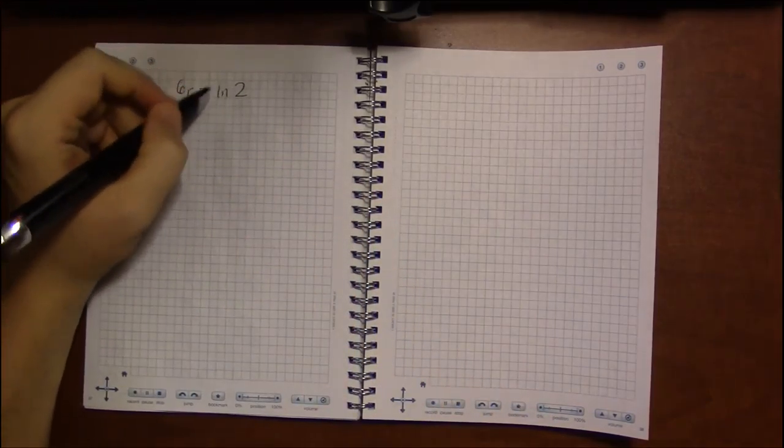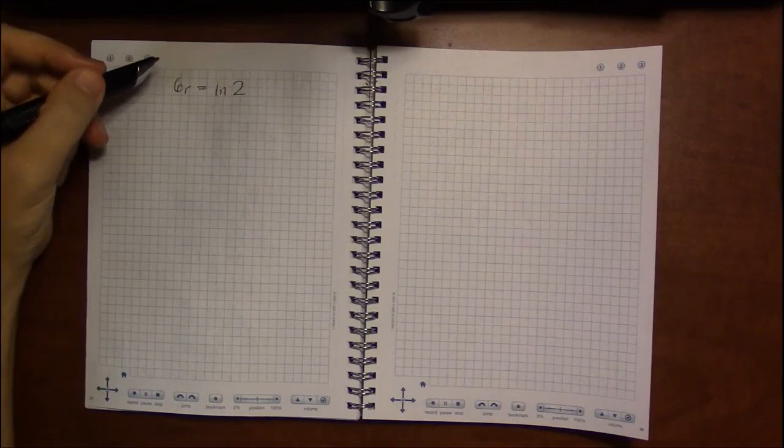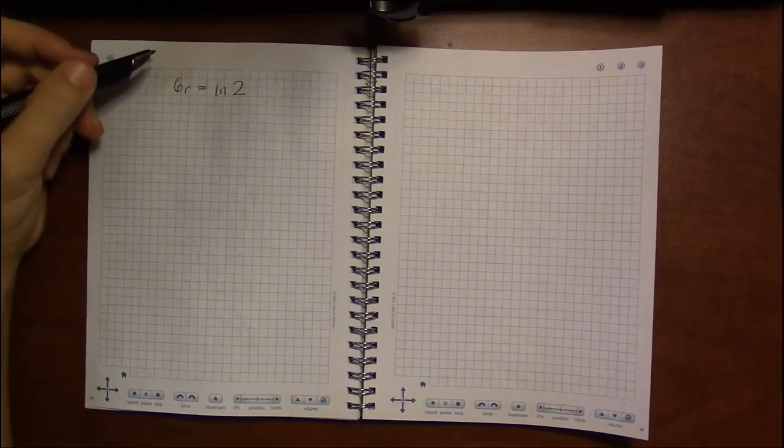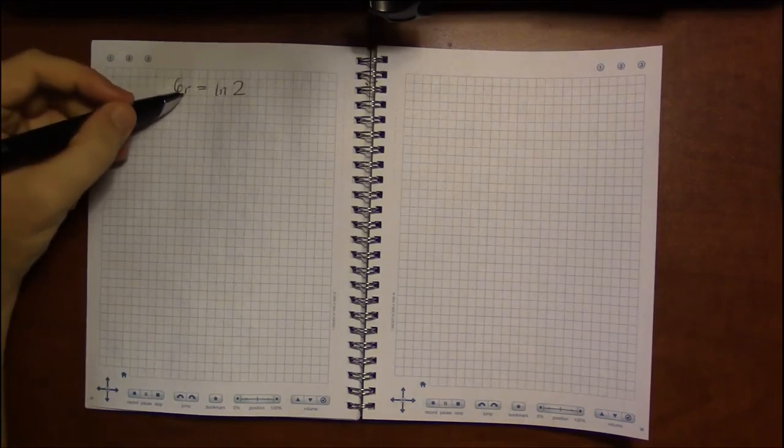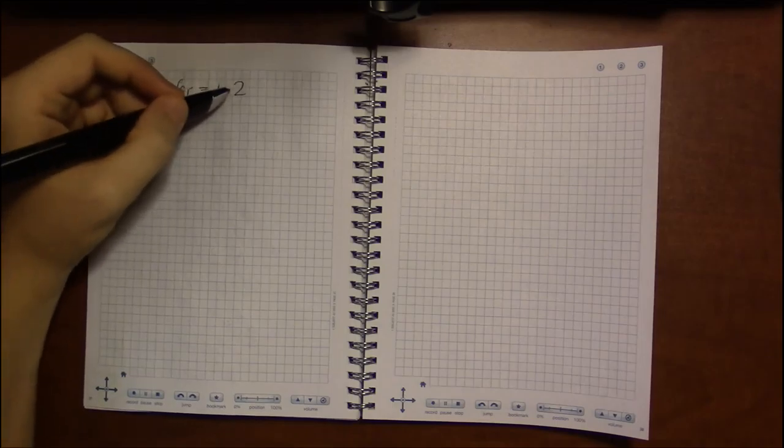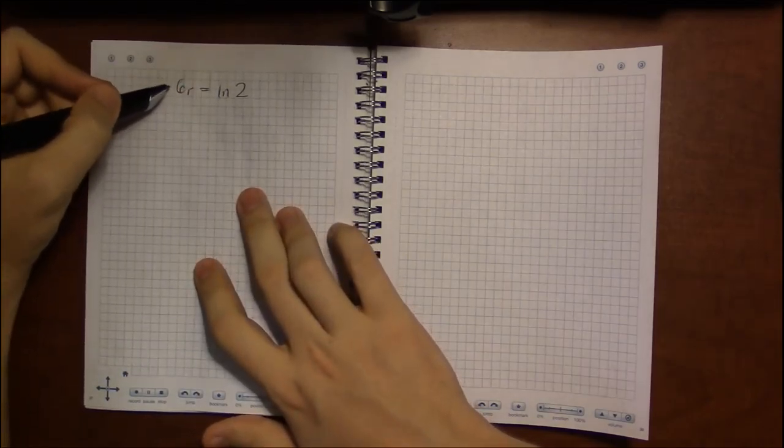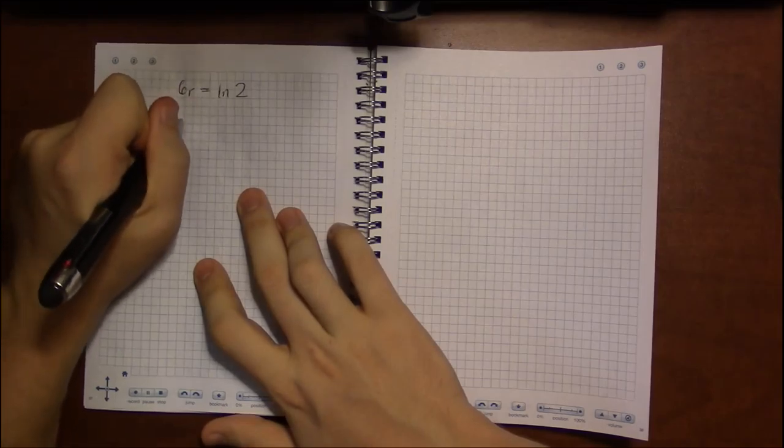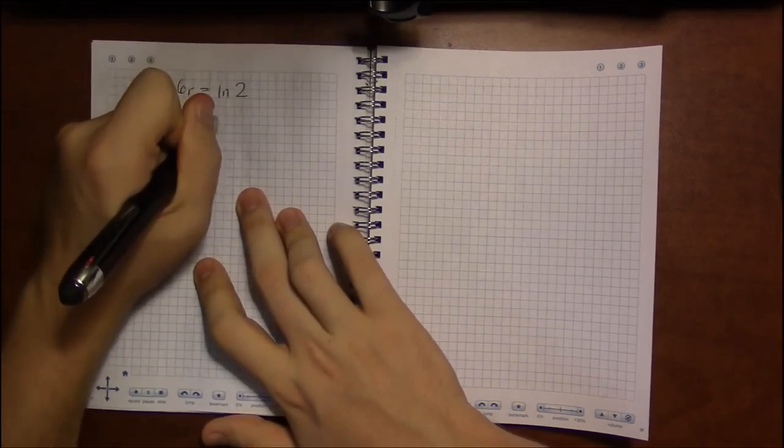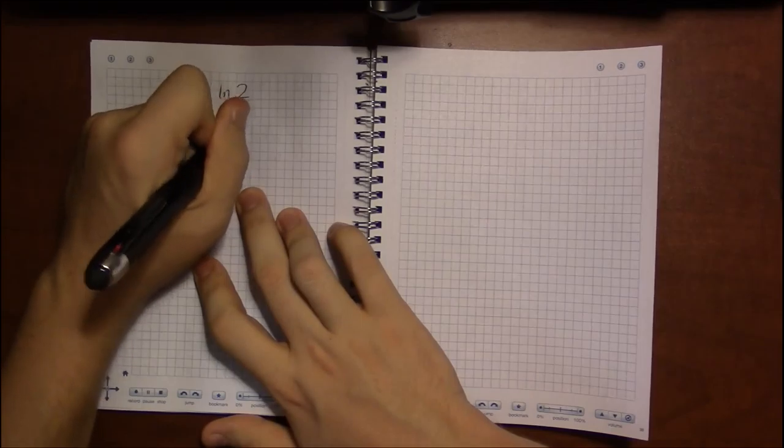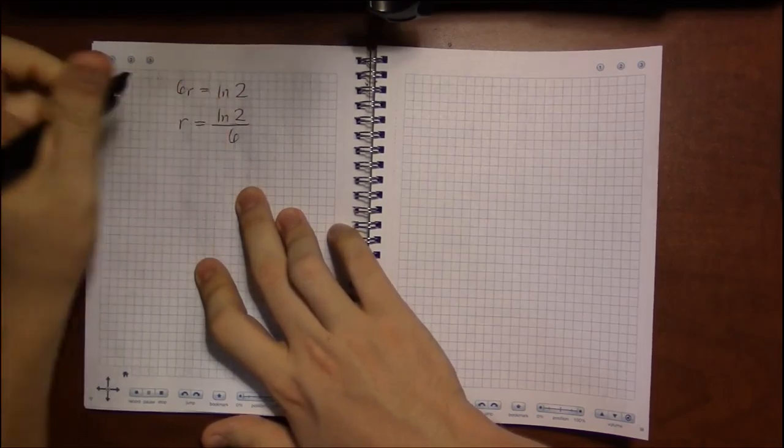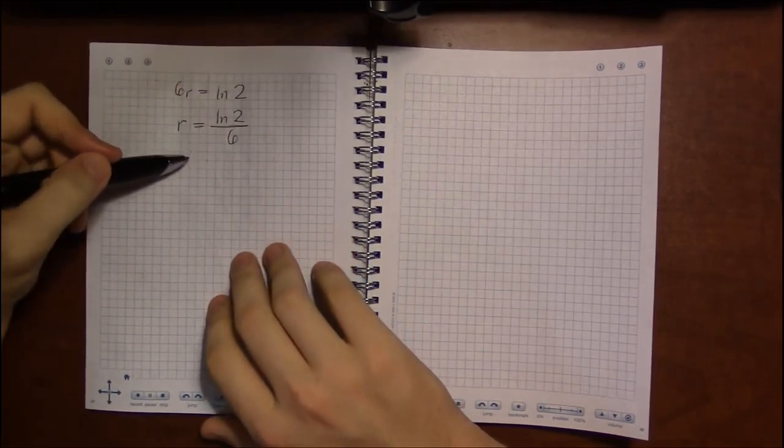Now LN of 2 is some weird nasty number. But it's just a number. So if we're trying to solve for R, think of this as just a number. Your next step is to divide by 6. So it's going to be natural log of 2 divided by 6.